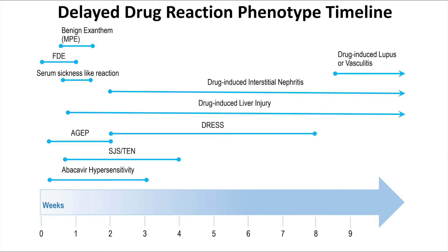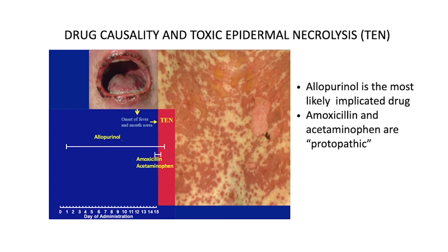Time from initiation of drug can give important clues — not only to the implicated drug when multiple drugs are started together, but also the phenotype. For instance, AGEP associated with antibiotics has a very short latency period of 24 to 48 hours, whereas DRESS can occur up to two months after first initiation of a drug.